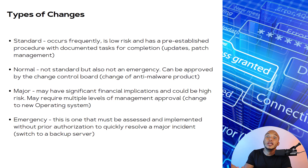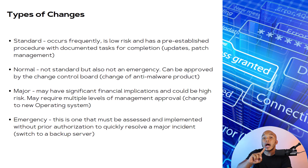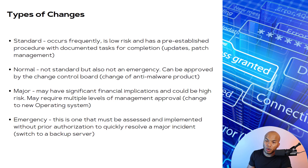Then there's the major change, which may have significant financial implications, could be high risk, and may require multiple levels of management approval — for example, a change to a new operating system. And then there's the emergency change, which must be assessed and implemented without prior authorization to quickly resolve a major incident. For example, if the server has gone down and you can't pick up a backup, you may just have to switch to a backup server as quickly as possible.